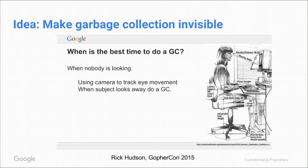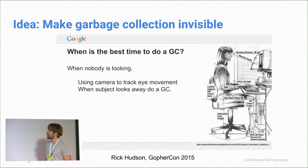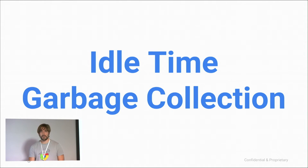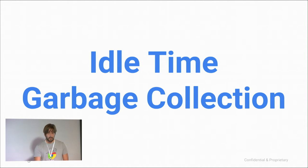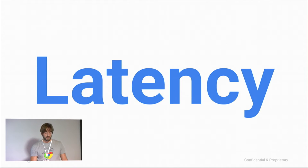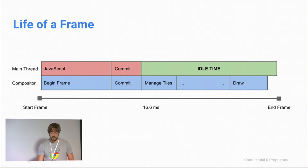The idea: let's make garbage collection invisible. The idea is to do garbage collection when nobody's looking — do it when we have idle time. Within Chrome, we actually know a lot about time. So let's look at latency first: if we know when there's idle time, we can schedule garbage collection there. In a simplified picture of what's going on in Chrome, we execute some JavaScript, tell the compositor we're done, the compositor does its work, and before the frame ends we draw — and we had a huge chunk of idle time there.